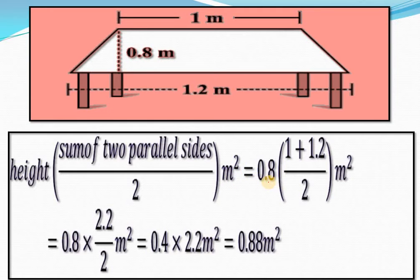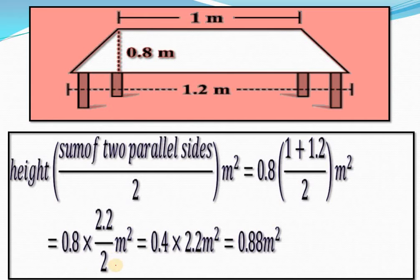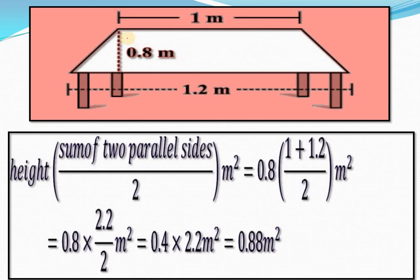Height हमारे पास 0.8 meter है। Sum of two parallel sides: 1 + 1.2 = 2.2, divide by 2. तो 0.8 × (2.2 / 2) = 0.8 × 1.1 = 0.88 square meters. So the area of this table top is 0.88 square meters.